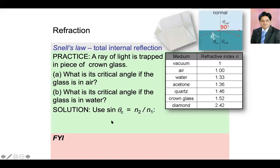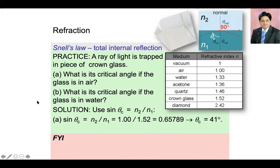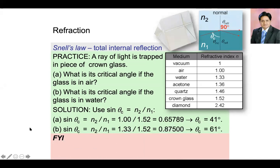The second part of the question is to find the critical angle when light travels from glass to water. Here the first medium is glass and the second medium is water. When you calculate, you will get approximately 61 degrees.